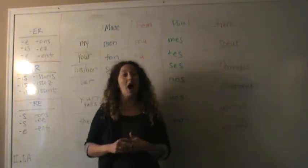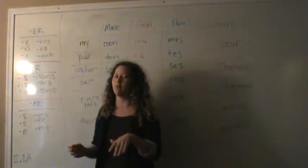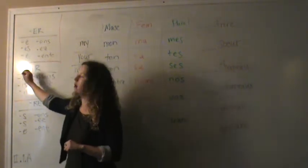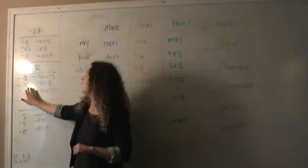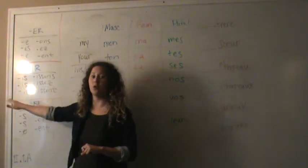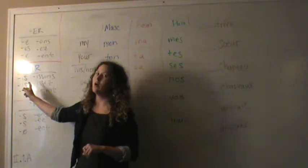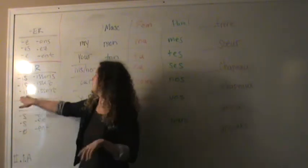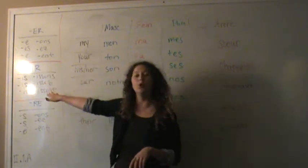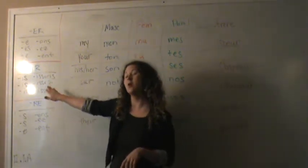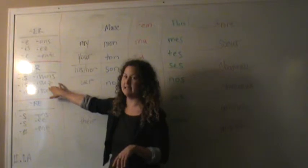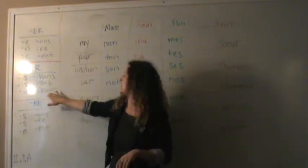And then for an IR verb, same process, regular IR verb in the present tense, you take off the IR and you're going to add your ending accordingly. For JE, you would add IS. For TU, it's also IS. For IL, L, or ON, it's IT. For NU, it is I-S-S-O-N-S. VU, I-S-S-E-Z, and IL and L, I-S-S-E-N-T.